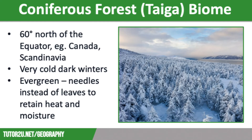Let's have a quick look at the coniferous forest biome, which is also known as the taiga. Coniferous forests are found roughly 60 degrees north of the equator in places such as Scandinavia, Canada and northern Russia. Winter is bitterly cold in this biome because of the earth's tilt, and there is very little sunlight for several months. Coniferous trees have needles instead of leaves, which retain heat and moisture during the cold, dark winters, and they are also evergreen, meaning they can maximise photosynthesis during the short summers.